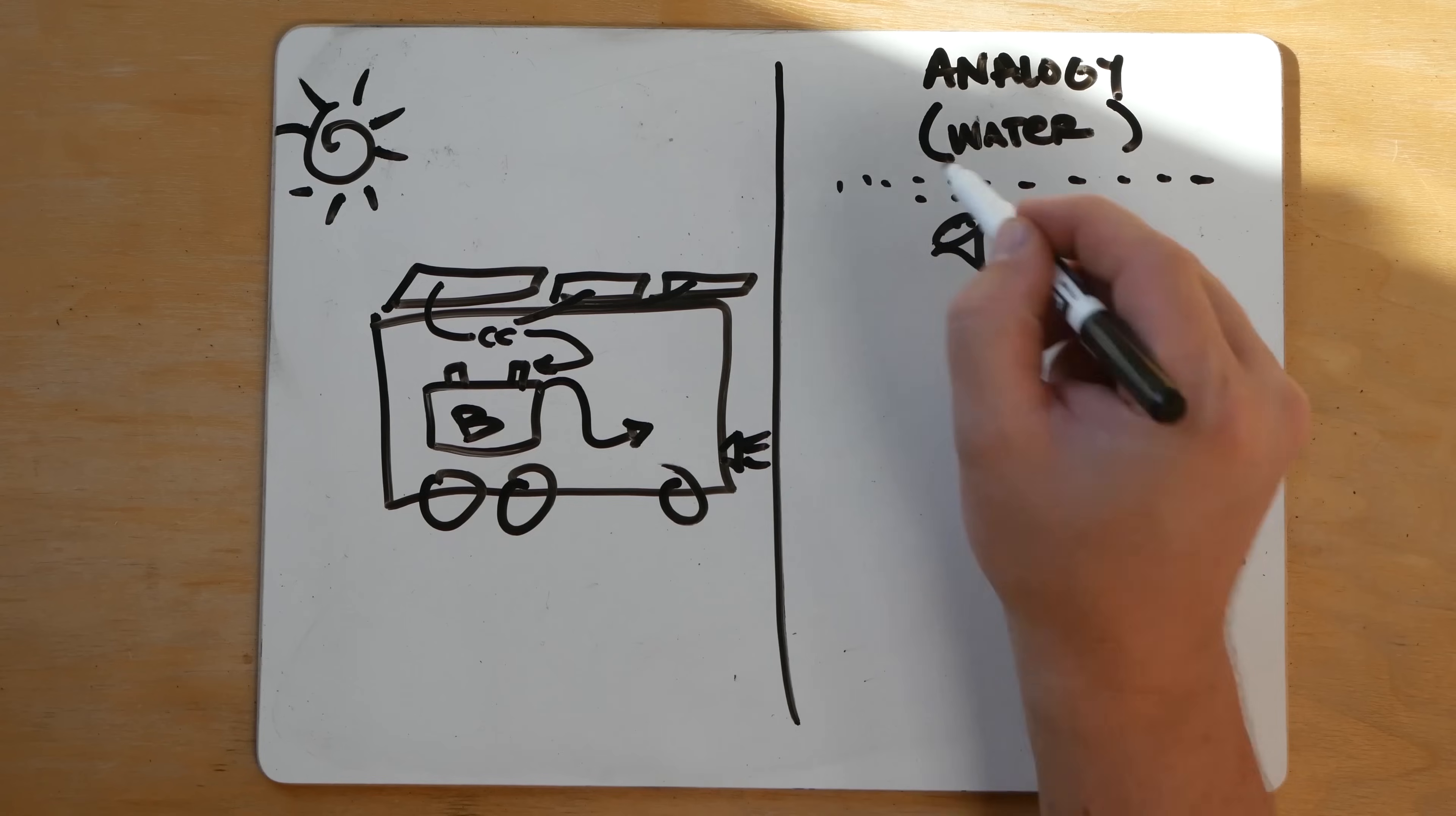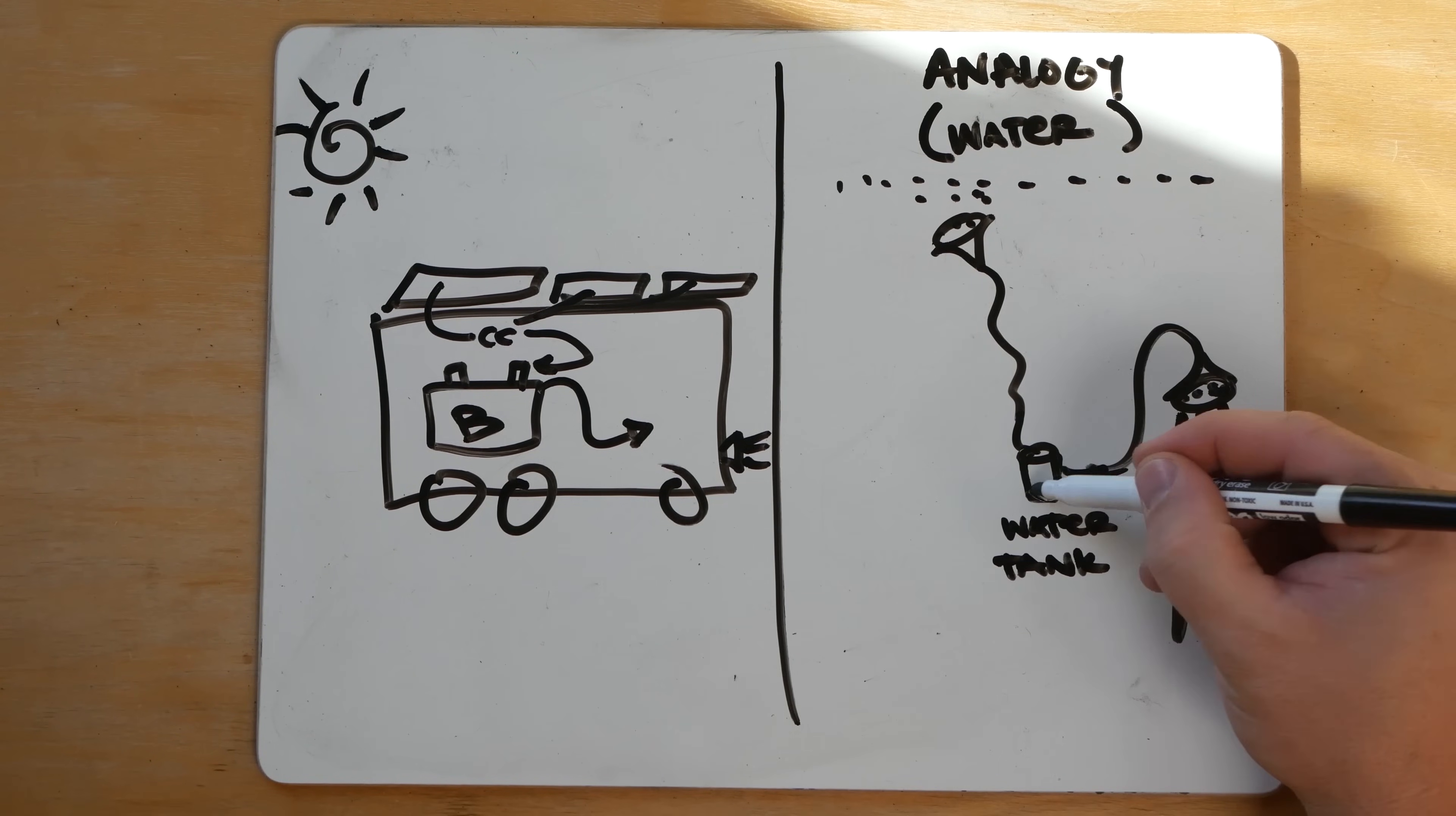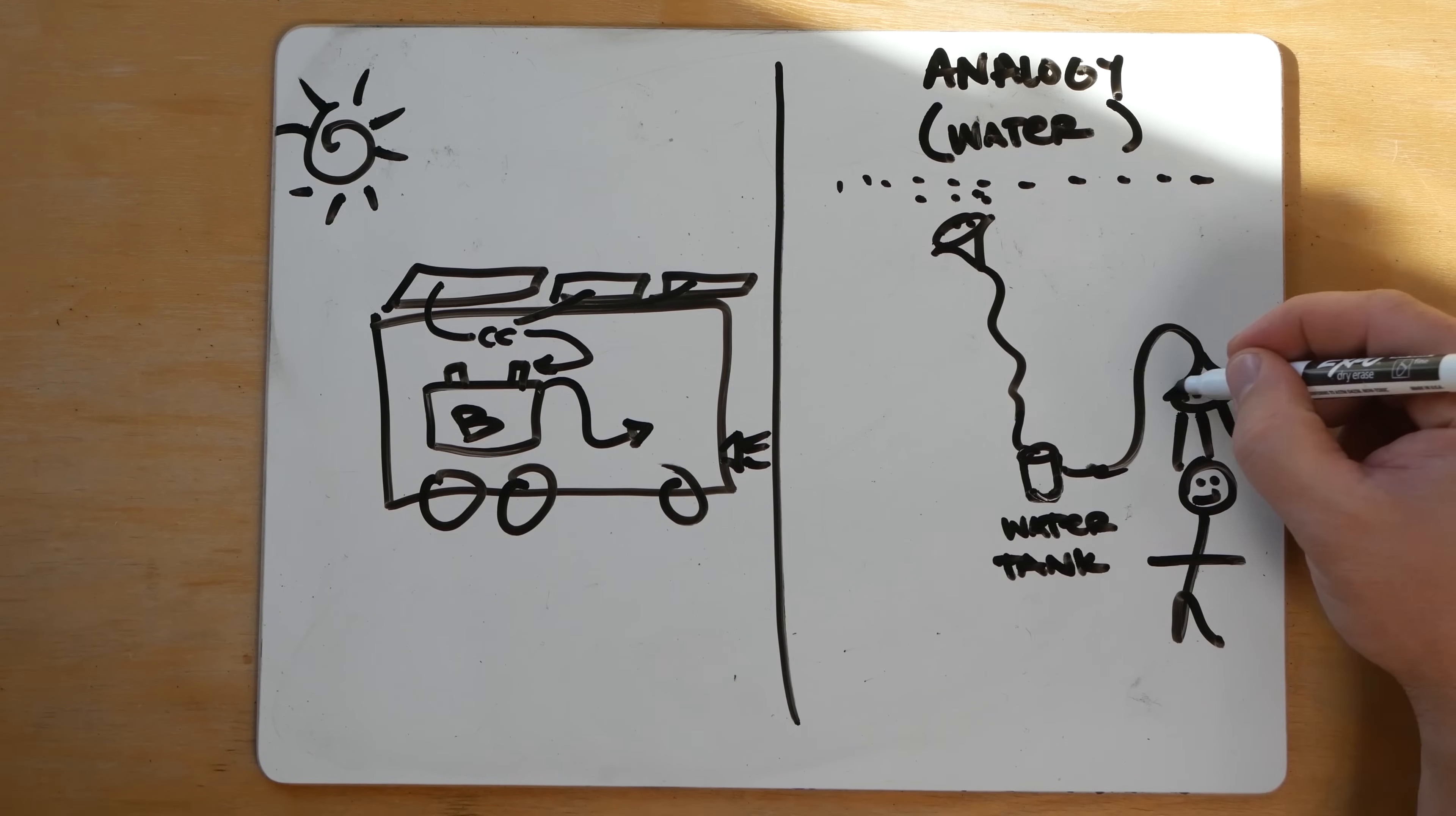Our solar panels are the funnel. They collect the rain and they're charging the battery or filling our glass here. This is the battery and then whatever the electricity the battery uses for headlights or fridge or heater or whatever, that's our shower. I hope that analogy makes sense.